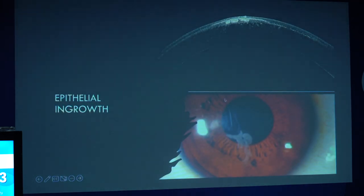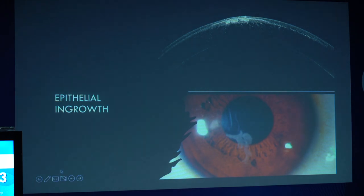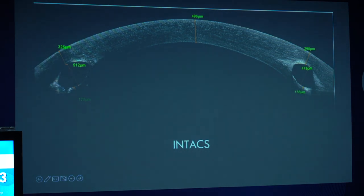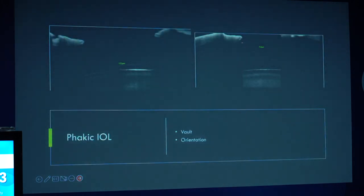This is a patient of epithelial ingrowth — you can clearly see localized nests of epithelium present below the flap. This patient ultimately underwent YAG laser to disrupt the cell nests. This is the OCT of a patient who has undergone INTACS implantation. In these conditions, OCT helps confirm that the segments are at the correct depth, in patients with impending extrusion, and can be used to sequentially monitor follow-up.